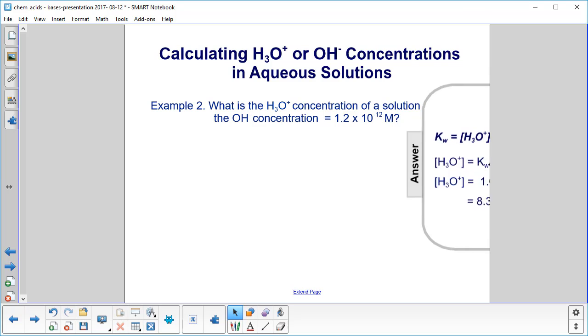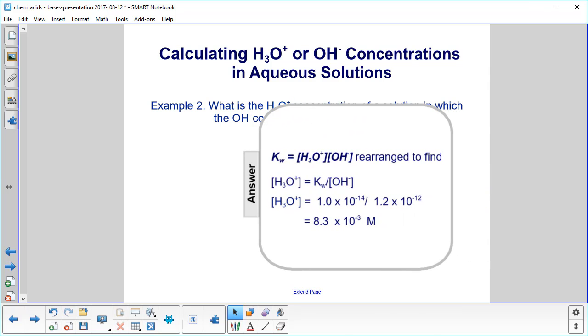Okay, let's see what we have. We have the ionic constant of water equals the concentration of the hydronium ion and the hydroxide. We're interested in finding the hydronium, so we divide both sides by the hydroxide ion concentration, plug in our numbers, and we get 8.3 times 10 to the minus 3 molarity for the concentration of the hydronium ion.